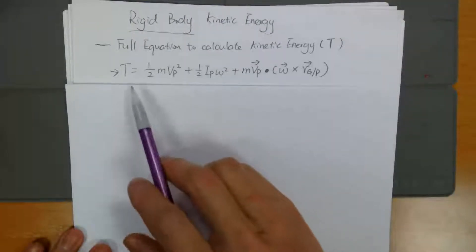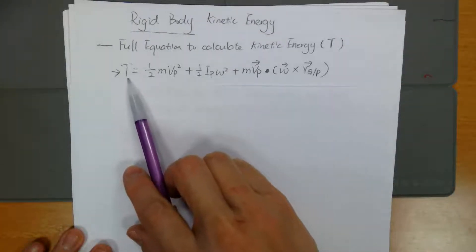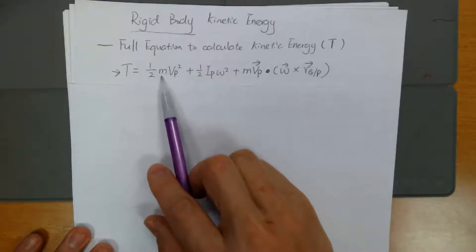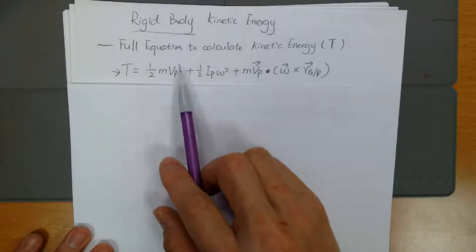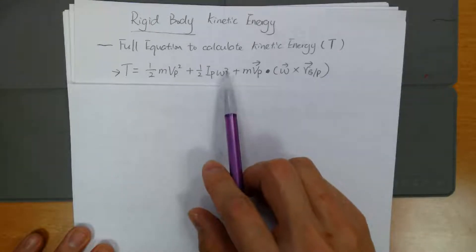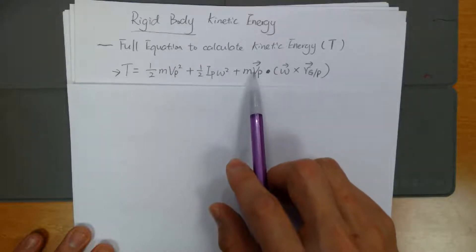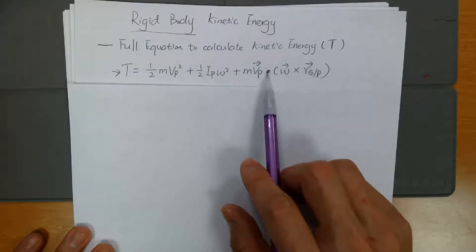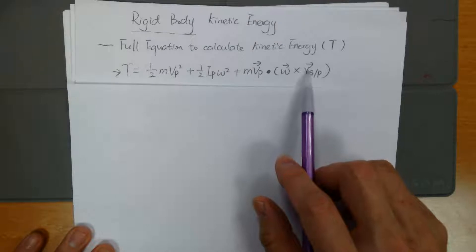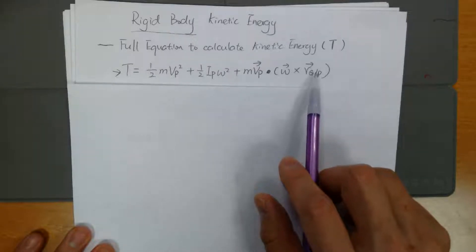So the full equation for kinetic energy defined as T, which is kinetic energy, equals one-half mass times vp squared plus one-half Ip omega squared plus mass vp vector, dot product of omega squared with Rg/p, position vector.